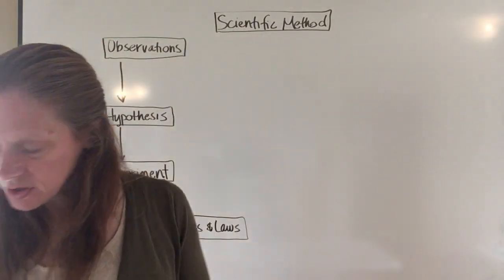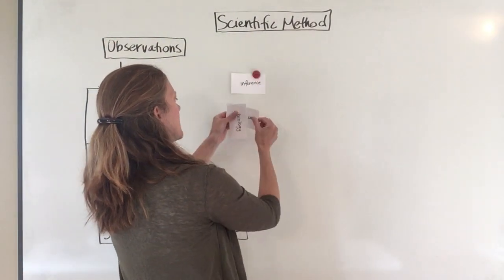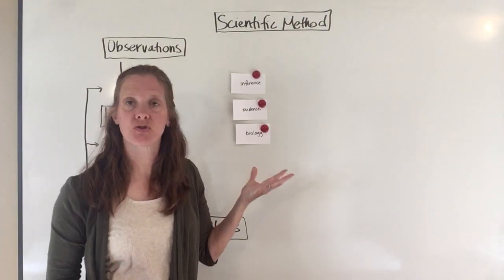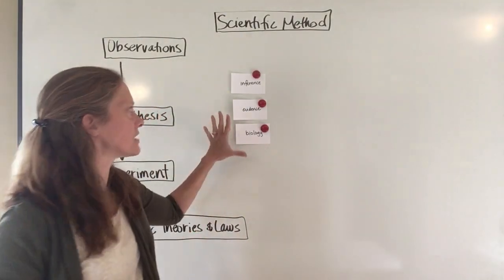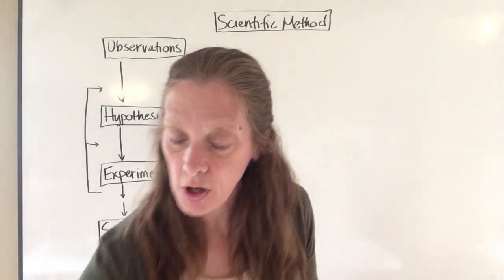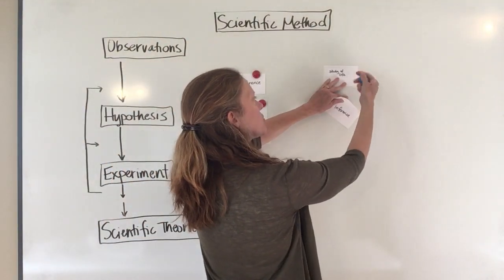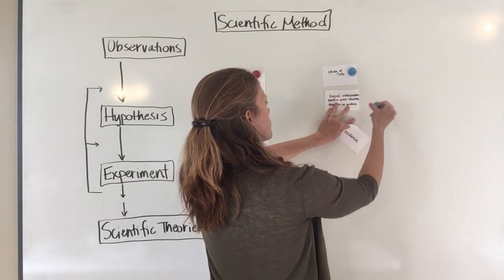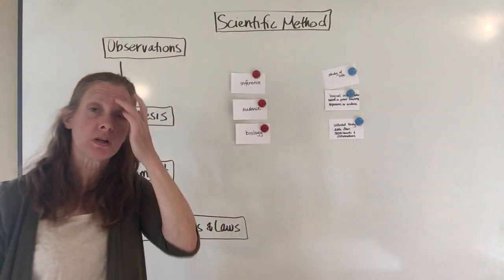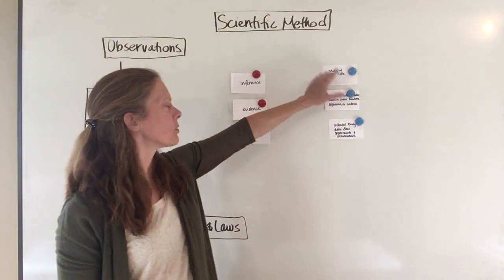The cards without definitions you're going to lay on the table. The three words from the first day would be 'inference,' 'evidence,' and 'biology.' Then you take your other cards that have the definitions and lay them on the table with the definition face up — there's the first definition, the second, and the third. Then as you study, look at the definition and try to match it up with the word. This one says 'study of life.'